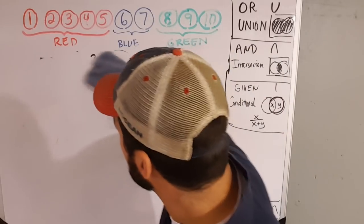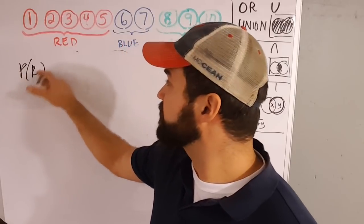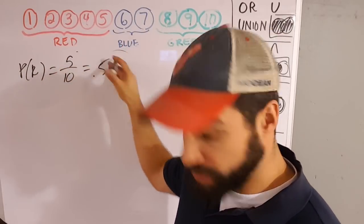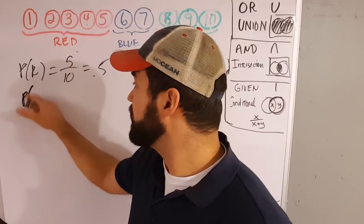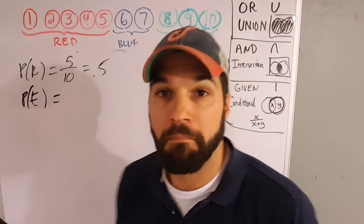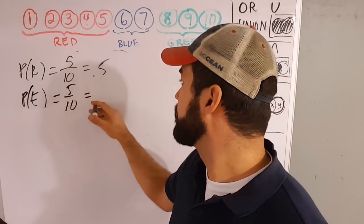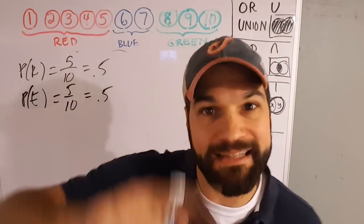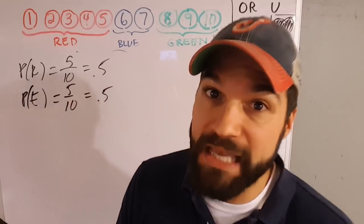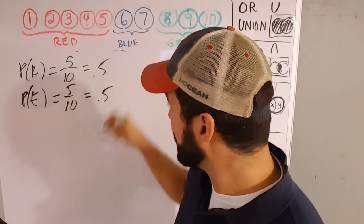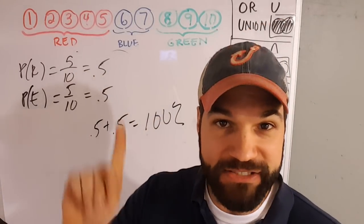Let's look at red and even. The probability of being red — since there are five of them overall — there's a 50% chance you reach into the bag and pull out a red. What's the likelihood you pull out an even? Half of them are even, so it's also a 50% chance. If I used that last rule: reach into the bag, you win a million bucks if it's red or even. I could just add 0.5 plus 0.5, which gives me a 100% chance that I'm going to win.